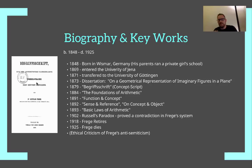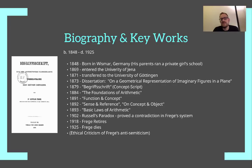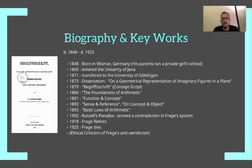Frege was German, born in Bismarck, Germany. His parents both ran a private girls' school, serving as principals at various points. He was Lutheran in his religious bent and very conservative in his political views. He entered university in 1869 at the University of Vienna, then transferred to the University of Göttingen in 1871. In 1873, his PhD dissertation was on a geometrical representation of imaginary figures in a plane — so he was through and through a mathematician. His most important contributions occur in both mathematics but principally logic. In 1879 he published the Begriffsschrift, or concept script.